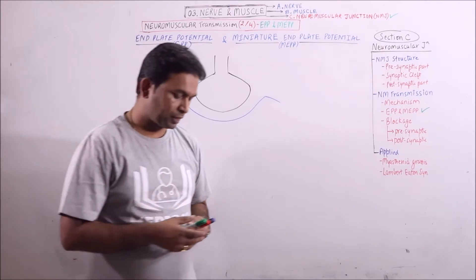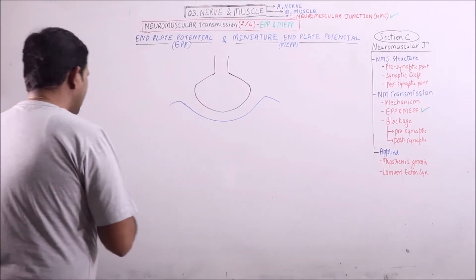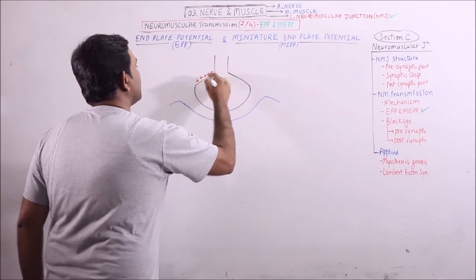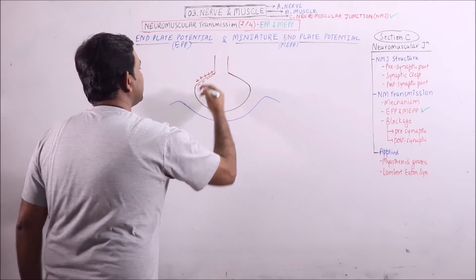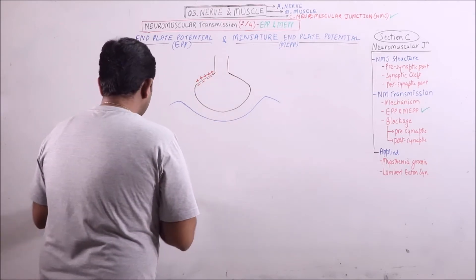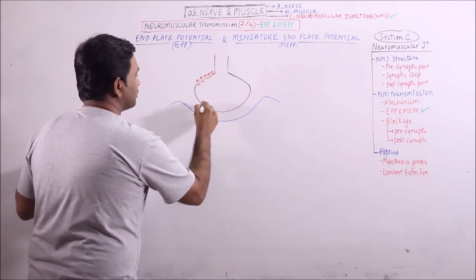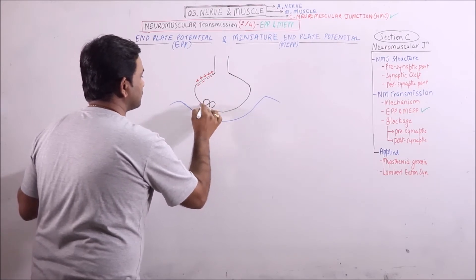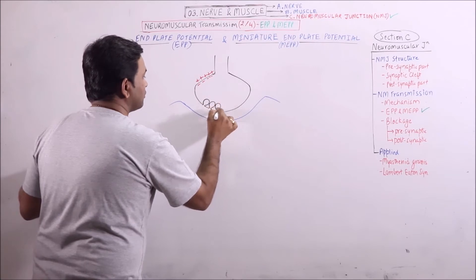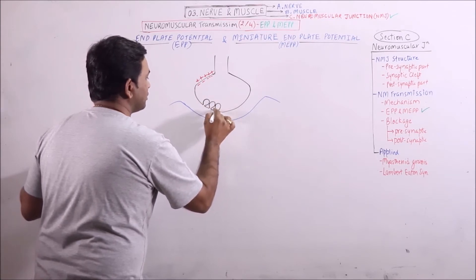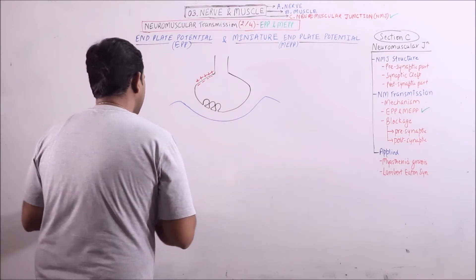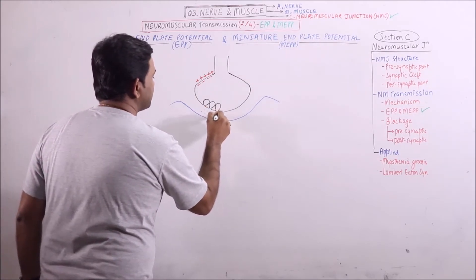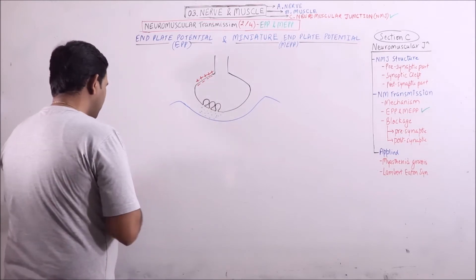and the miniature end plate potential. Normally when impulse arrives at the axon terminal, the vesicles fuse with the plasma membrane of axon terminal and neurotransmitters are released that involve the acetylcholine receptor.